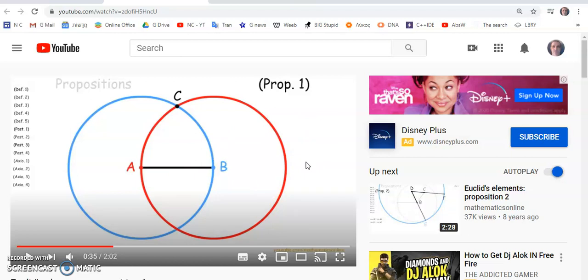Proposition 1 states that given any shortest distance between two points, it is possible to construct a geometric object that has three points, where the distance between any of those two points is the same as the distance between the original two points, A and B, that you see in this diagram. Do you understand that?